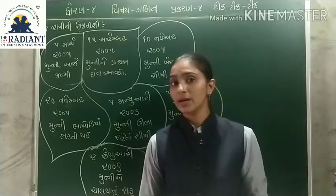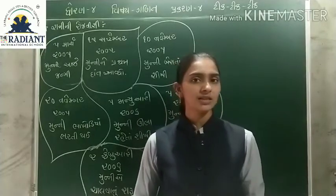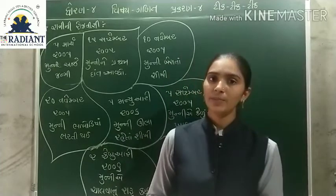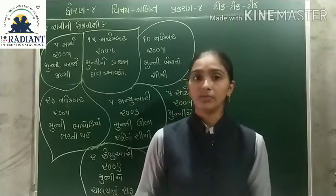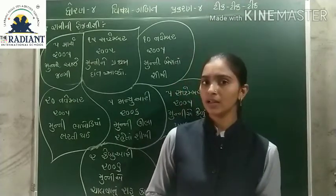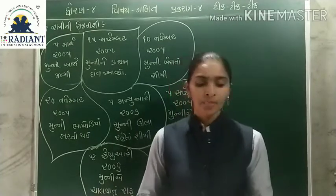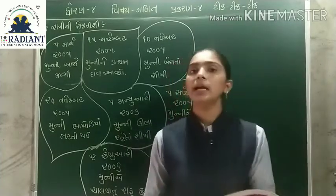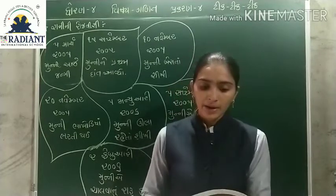જસો, ગરમારેજો અને સુરક્ષિતરેજો. આગળના વિડ્યો માં આપણે મહીનાઓ વીષે સીખ્યા - કે આપણી એક વર્ષ ના મહીનાઓ કેટલા છે, લીક વર્ષ કોને કેવાય, વગેરે વીષે આપણે સીખ્યા. હવે જુઓ, આપણ ચોપડીની અંદર પાના નંબર તેતાળીસ ઉપર.